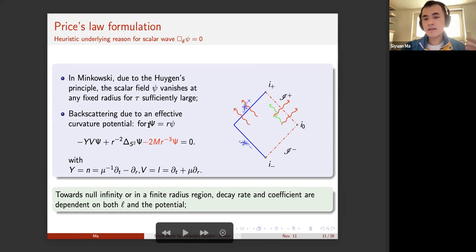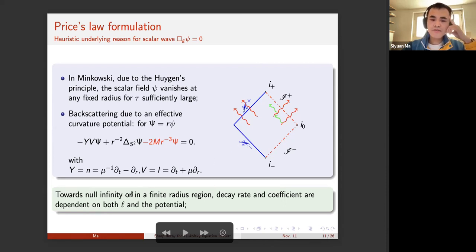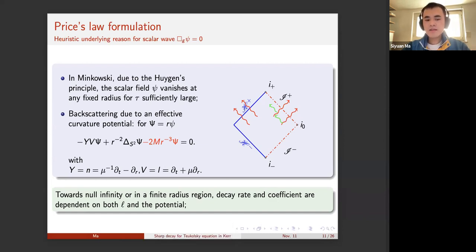The potential already shows up in the scalar wave equation. If you write it in terms of the radiation field, this capital Psi equal to r times psi, the scalar wave equation becomes minus Y V big Psi plus the angular part, and then there is a potential part. Here Y is the N direction of the null tetrad and V is the L direction — N being the ingoing null derivative and V the outgoing null derivative. The decay rates and the coefficients depend on both L and the potential. If you choose a different potential for different equations, the coefficient changes, and if the falloff is different, then the decay rate changes as well.